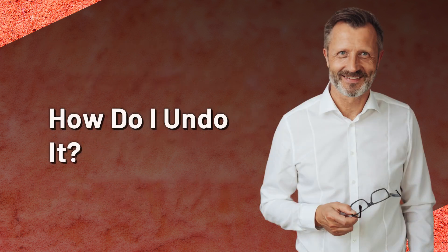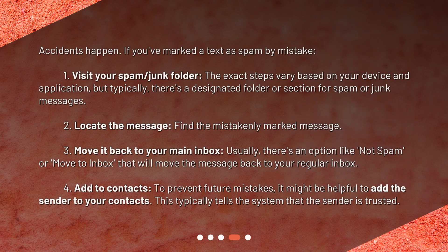How do you undo it? Accidents happen. If you've marked a text as spam by mistake: first, visit your spam or junk folder — the exact steps vary based on your device and application, but typically there's a designated folder or section for spam or junk messages. Second, locate the mistakenly marked message. Third, move it back to your main inbox — usually there's an option like "Not Spam" or "Move to Inbox" that will move the message back to your regular inbox.